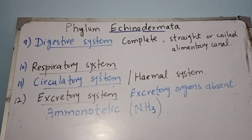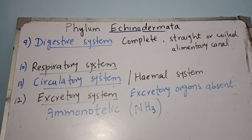Regarding the excretory system, dedicated excretory organs are absent. Since echinoderms live in sea water, they excrete ammonia — echinoderms are ammonotelic, meaning their nitrogenous waste material is ammonia. Waste elimination again takes place through the water vascular system.